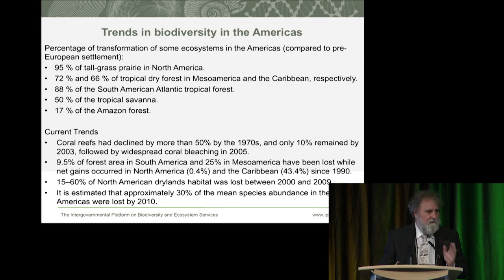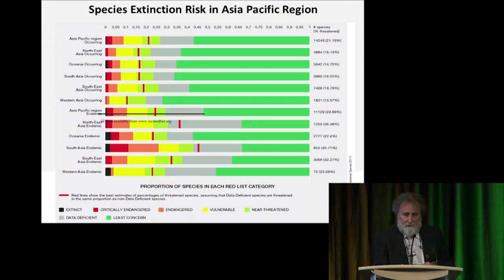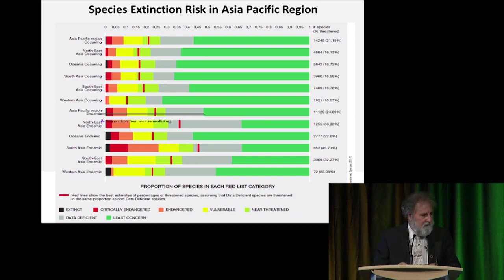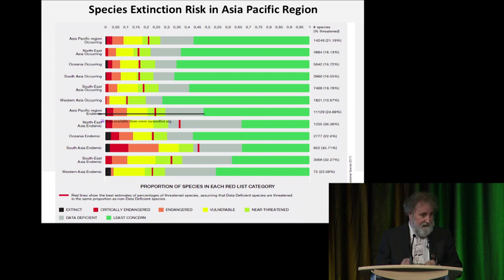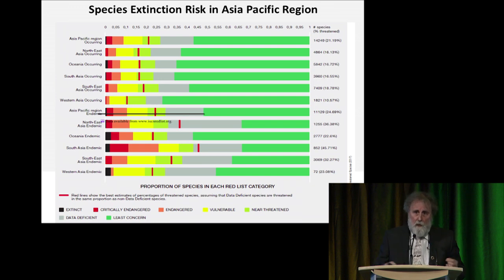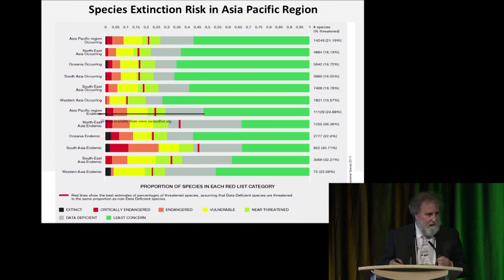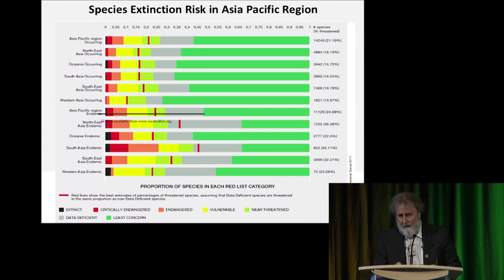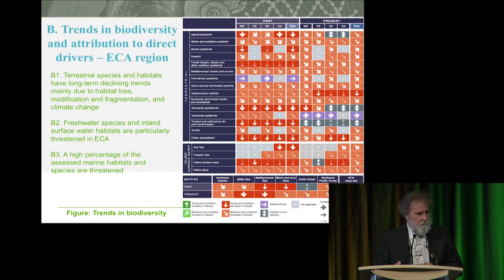The IUCN Red List from Asia Pacific — all three other regions look very similar. Green means near threatened, yellow means vulnerable, red means critically endangered, and black means extinct. The bars show what we view as threatened and could go extinct in the coming decades. They all line up around 0.2 to 0.25 — in other words, 20 to 25% of all species we've assessed are threatened with extinction.